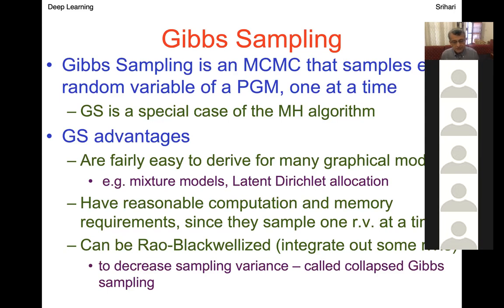Some of you may know about Rao — Professor C. R. Rao, one of the most famous scientists India has produced. He was a statistician at the Indian Statistical Institute, close to 100 years old now, living in Buffalo, New York. C. R. Rao has a number of important theorems in statistics, including the Rao-Cramér inequality and the Rao-Blackwell theorem, which has an important bearing on sampling and what is called particle-based inference.